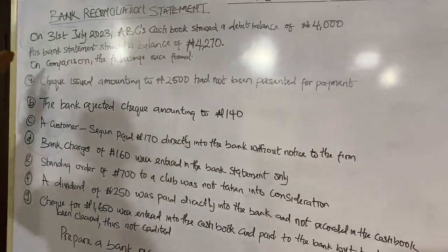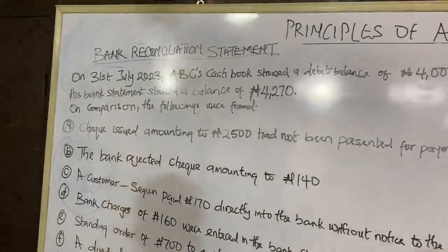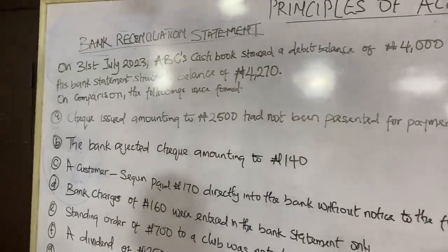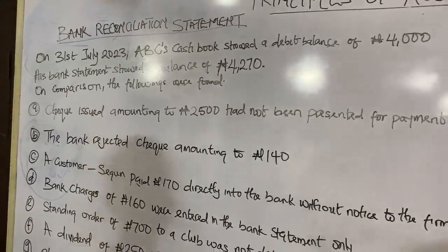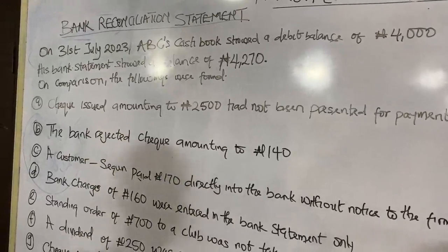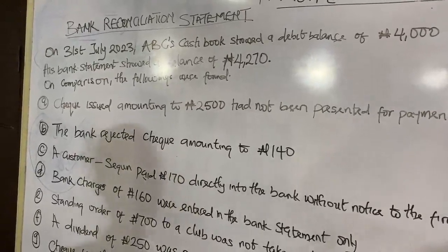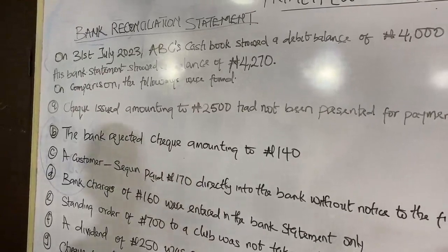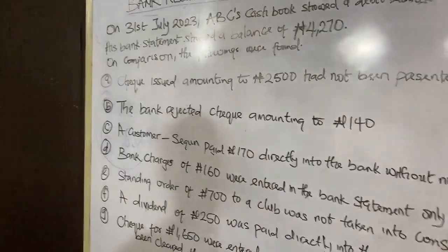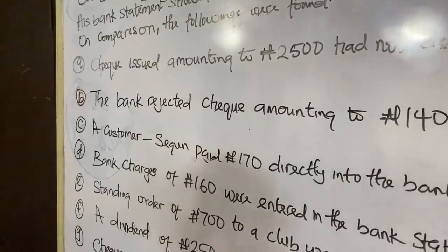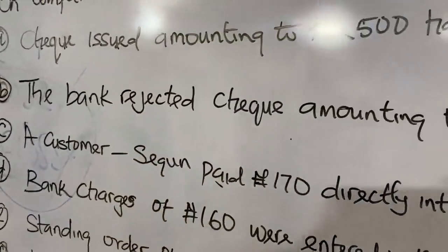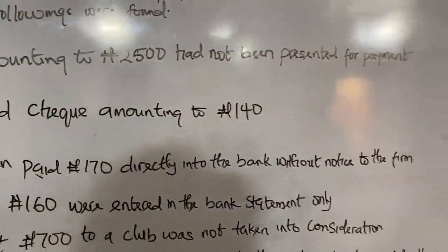On 31st July 2023, ABC's cash book showed a debit balance of 4,000 Naira. But his bank statement showed a balance of 4,270 Naira. So there is a difference — you can see it is not the same. On comparison, the following were found. One: checks issued amounting to 2,500 Naira had not been presented for payment.